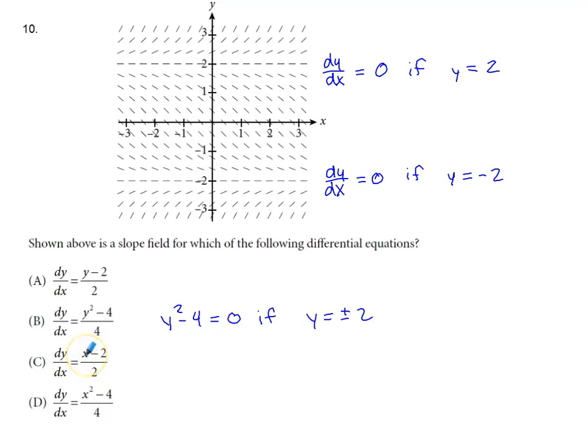This has a value of 0 when x is 2. This has a value of 0 when x is 2 and when x is negative 2, but the only one that has a value of 0 both when y is 2 and when y is negative 2 is option B, since that numerator when set equal to 0 would have solutions of plus or minus 2.